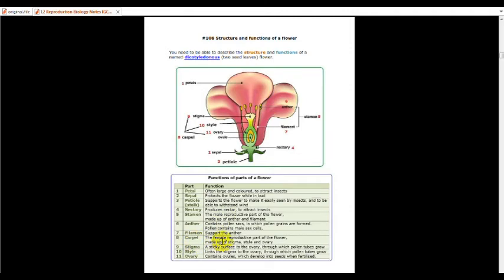Carpel, it is the female reproductive part of the flower. It is made up of stigma, style, ovary and ovule. So stigma is the sticky part, the sticky surface of the carpel. It is sticky as to catch the pollen that comes from the same flower or that comes from other flowers.